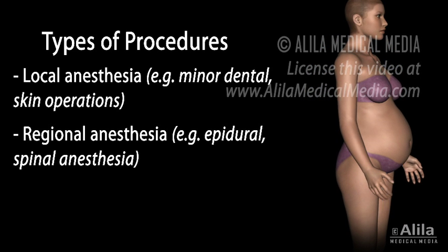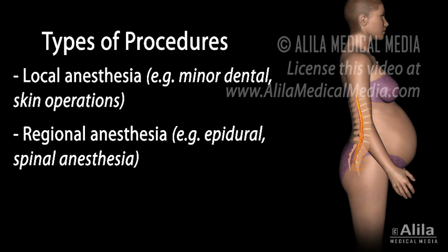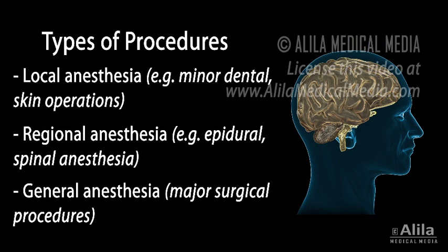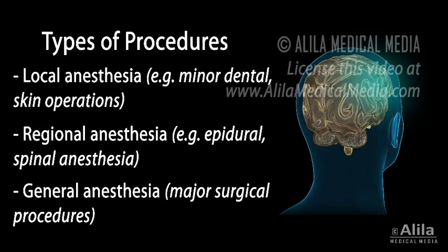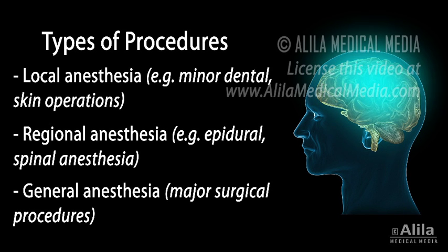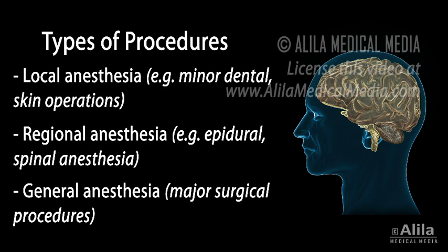Regional anesthesia – a local anesthetic is injected near a cluster of nerve roots to prevent pain sensation from the area innervated by those nerves. An epidural given to women in labor is an example of this type. General anesthesia – general anesthetics are used to suppress the entire central nervous system, resulting in loss of consciousness.